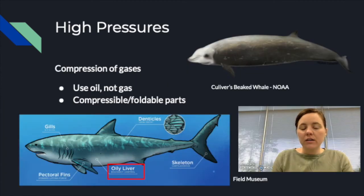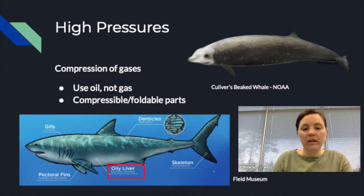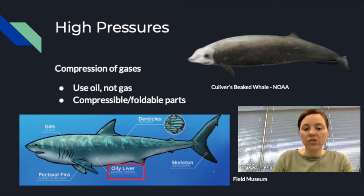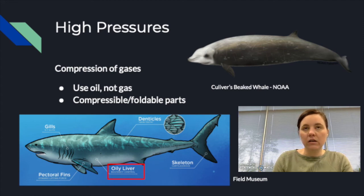High pressure is another challenge. As organisms dive deeper to find food, pressure increases rapidly. Sharks and other cartilaginous fish lack swim bladders, which bony fish have but which can be compressed under pressure, making buoyancy control harder. Instead, sharks have oily livers — the oil cannot be compressed but is very buoyant, helping them float in water.